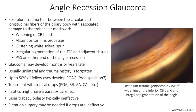Care should be taken to taper steroids as soon as possible to avoid steroid-induced spikes in IOP. Laser trabeculoplasty is believed to be less effective but is also low risk if attempted. Minimally invasive angle procedures, such as trabecular meshwork bypass stents and goniotomy, have not been well studied in angle recession glaucoma.